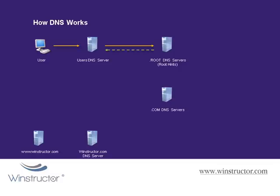A root server doesn't know the IP address of the winstructor.com DNS server because it's not responsible for it. So the root server sends back what it does know — the details for the DNS servers responsible for the .com domain. The local DNS server can then ask the .com DNS servers for the IP address of the winstructor.com DNS server. Those .com servers can provide that information because when the domain was registered, the IP addresses of our DNS servers were supplied.